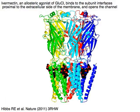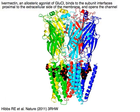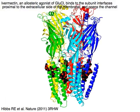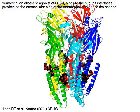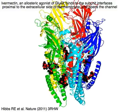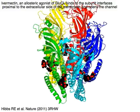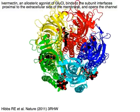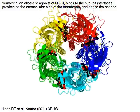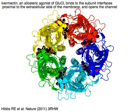Ivermectin, an allosteric agonist of GLU-CL, binds to the subunit interfaces proximal to the extracellular side of the membrane, and opens the channel.